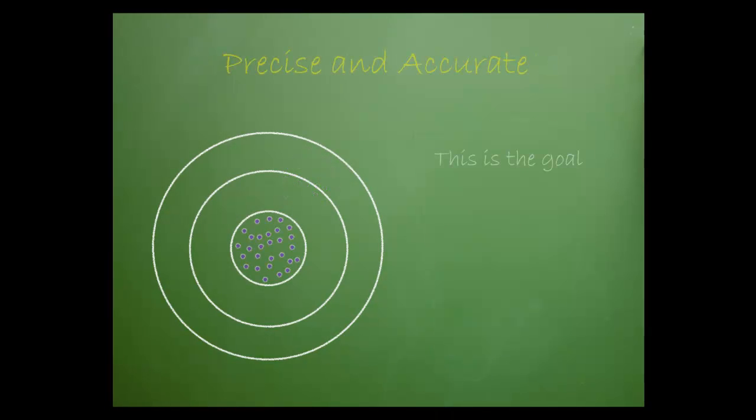The goal of every laboratory performing quantitative quality control testing is to repeatedly hit close to the bullseye, therefore achieving both accuracy and precision.